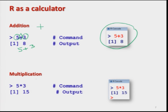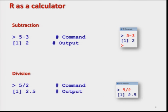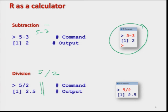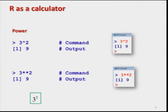For multiplication, the operator is the star sign. So 5 star 3 gives 15. For subtraction, the operator is the hyphen or minus sign, so 5 minus 3 gives 2. For division, I write 5 divided by 2 using the forward slash, and the answer comes out to be 2.5.